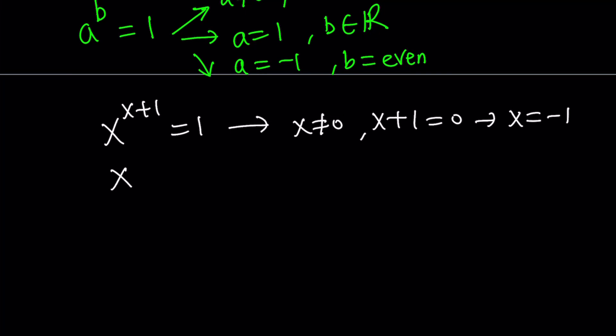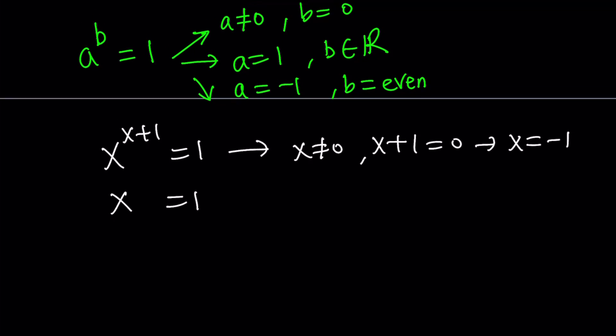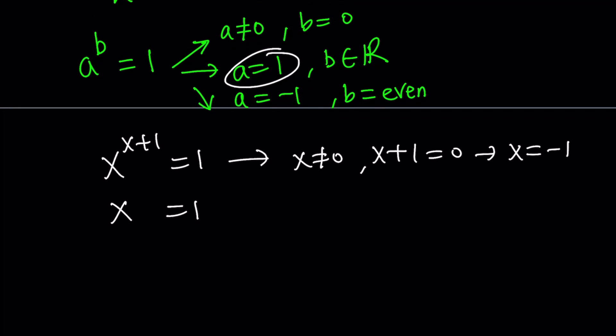The second scenario is x equals 1 because that's the base. And in this case, we don't really care about x plus 1, but we just want it to be a real number. And it is going to be a real number. So x equals 1 is going to be the other solution.